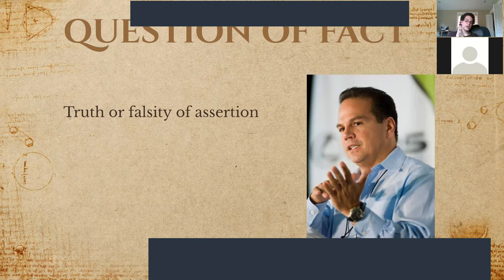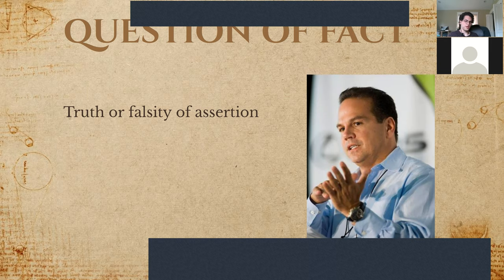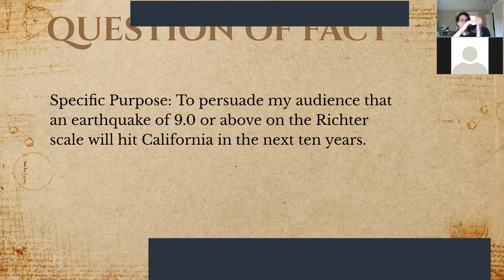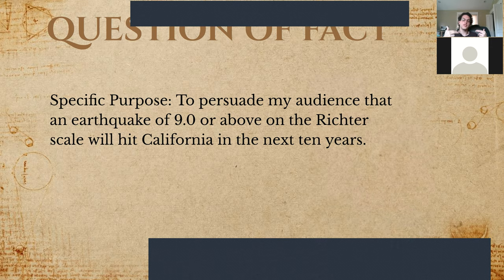In a question of fact speech, what you're trying to do is convince the audience that something is true or false — you're trying to argue for the actual veracity of the statement. An example of a question of fact speech would be to persuade your audience that an earthquake of 9.0 or above will hit California in the next 10 years. That makes it a question of fact because all you're trying to convince the audience is that this statement is true. Another example would be trying to convince the audience that the earth is not flat — that is a question of fact.